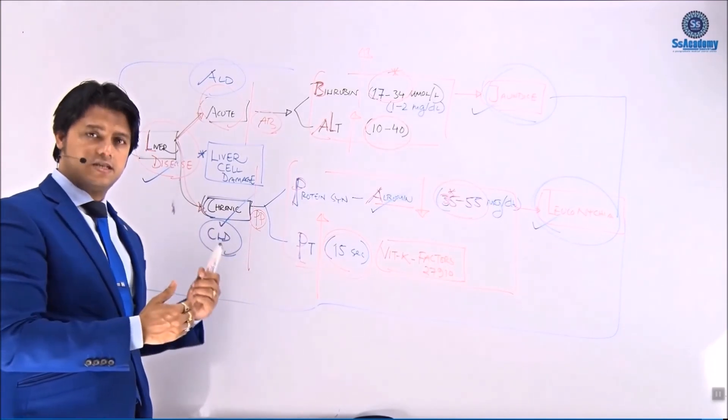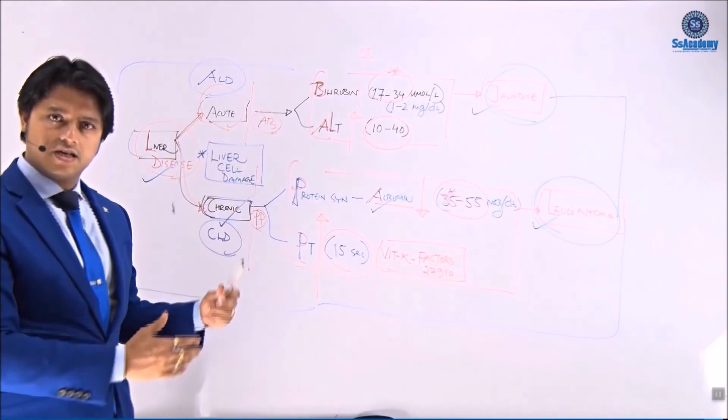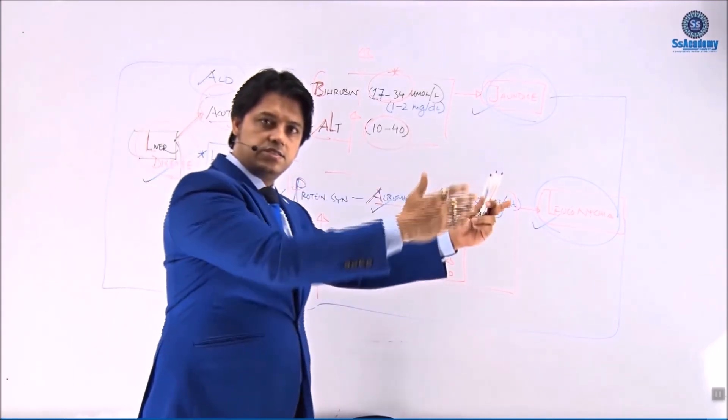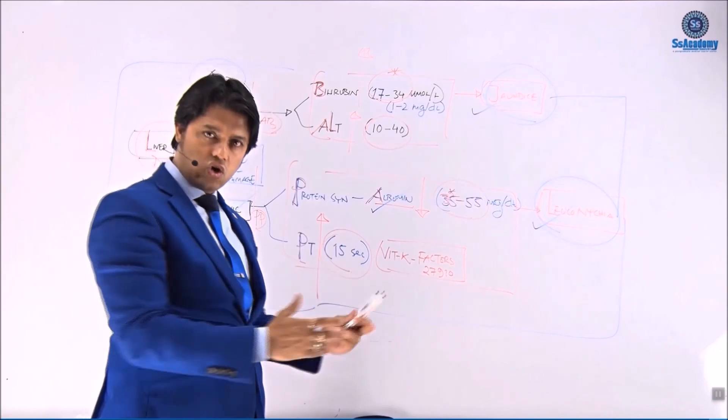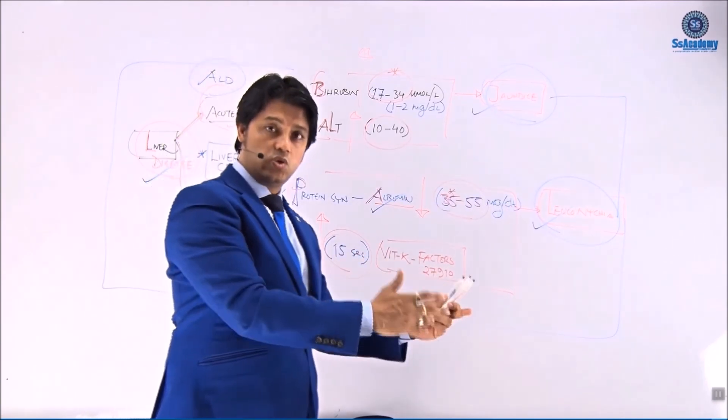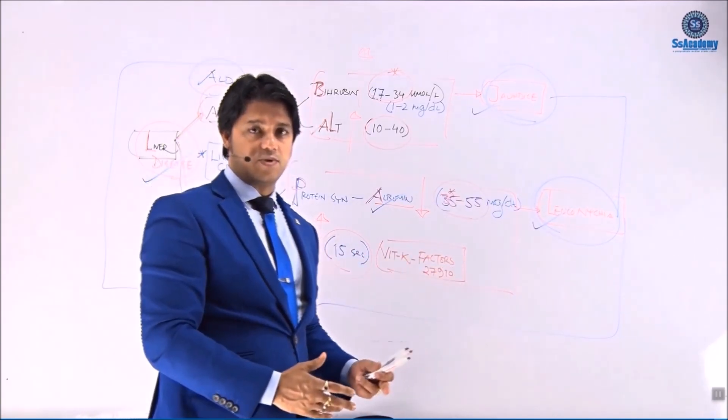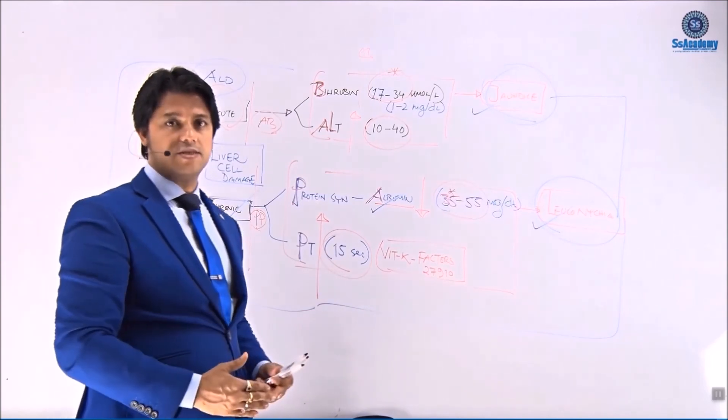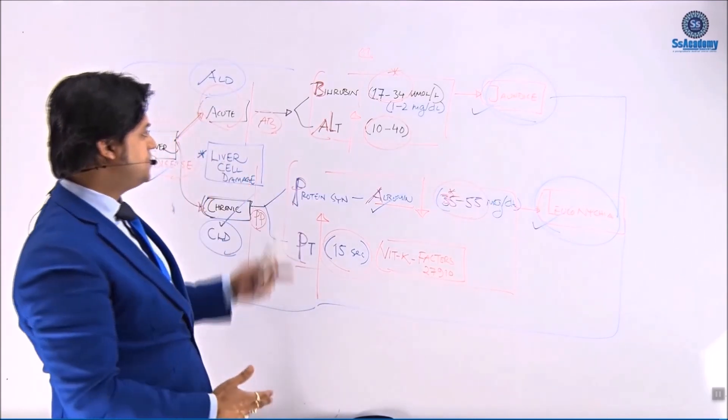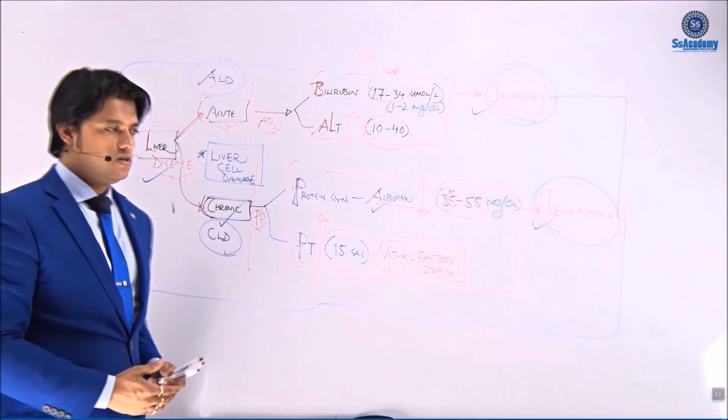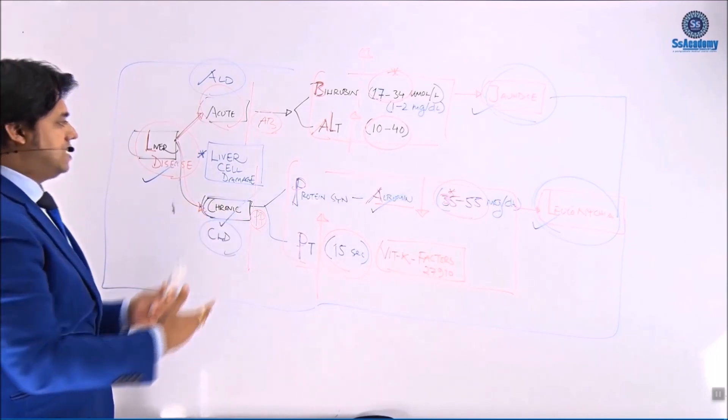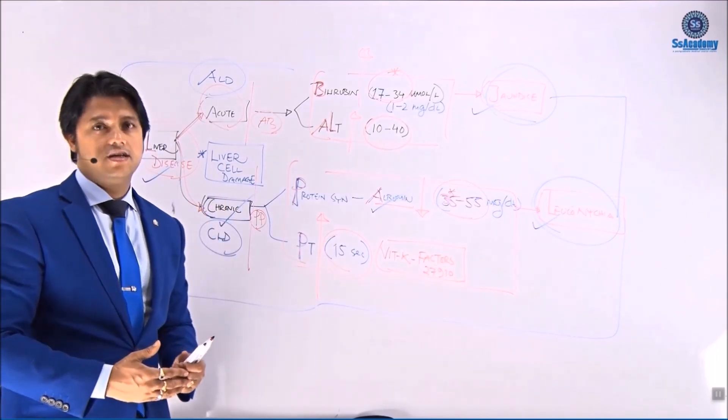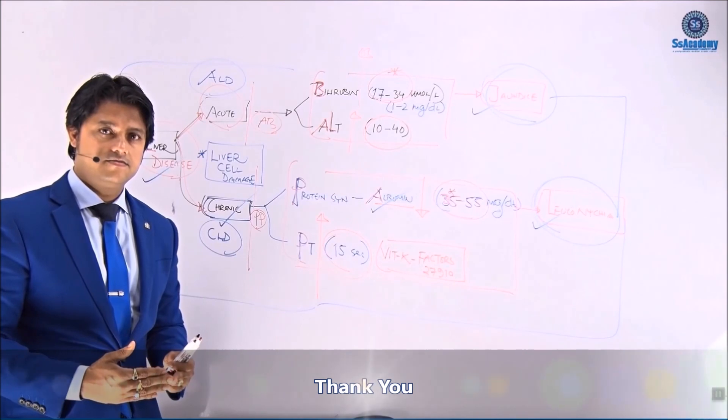So once again the summary talk. The liver damage, hepatocyte damage, acute and chronic. Acute bilirubin raised, ALT raised. Chronic albumin low means the leukonychia, hypoalbuminemia. And prothrombin time is high. These four important investigations that we do. Yes, to differentiate between the acute and chronic liver dysfunction and damage. Thank you, thank you very much.